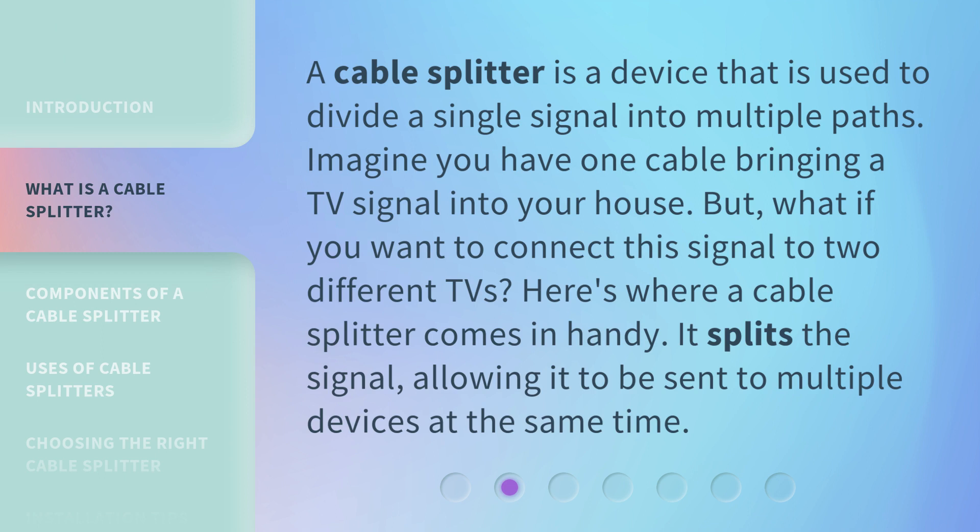A cable splitter is a device that is used to divide a single signal into multiple paths. Imagine you have one cable bringing a TV signal into your house. But what if you want to connect this signal to two different TVs? Here's where a cable splitter comes in handy. It splits the signal, allowing it to be sent to multiple devices at the same time.